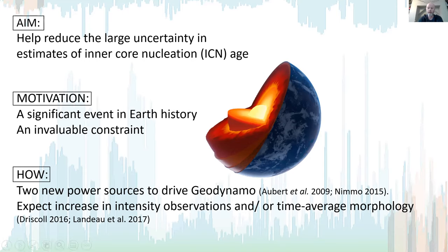We believe we can do this with paleointensity because the formation of the inner core brought about two new power sources to help drive the geodynamo: compositional convection and the subsequent release of latent heat. So we'd expect to see an increase in intensity observations at Earth's surface and/or a change in the time-averaged morphology of the field.